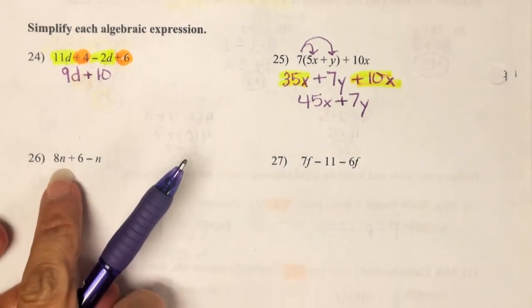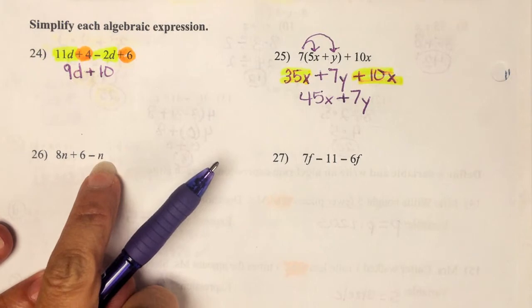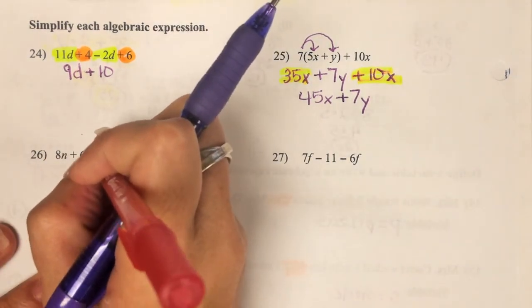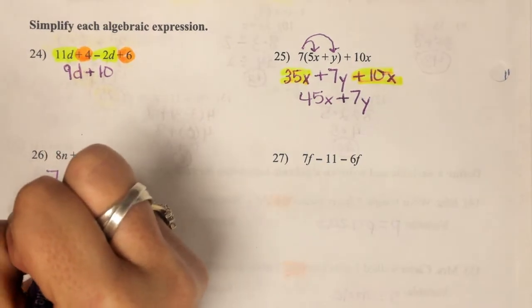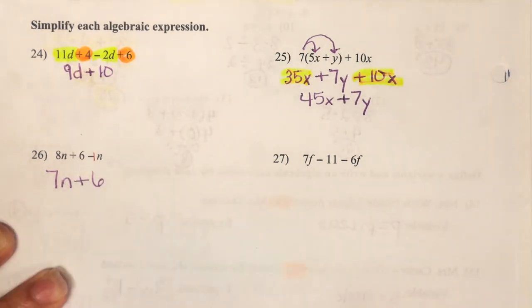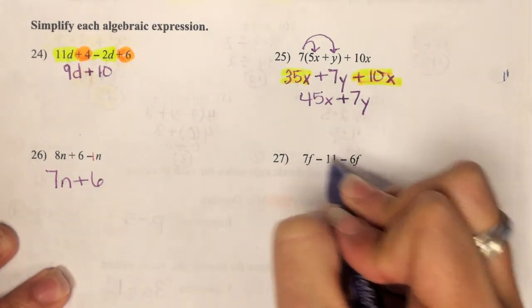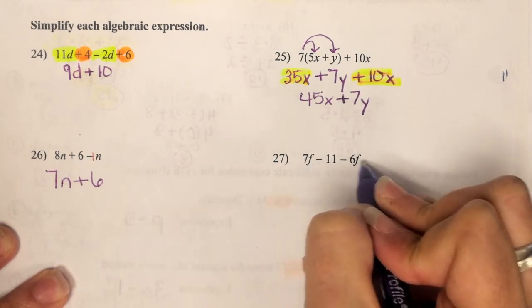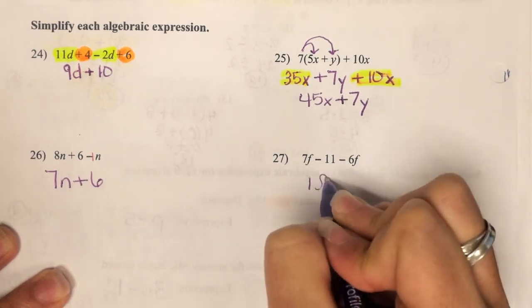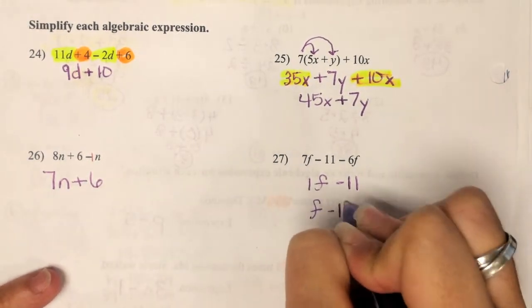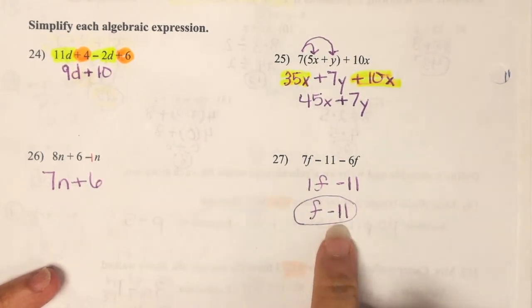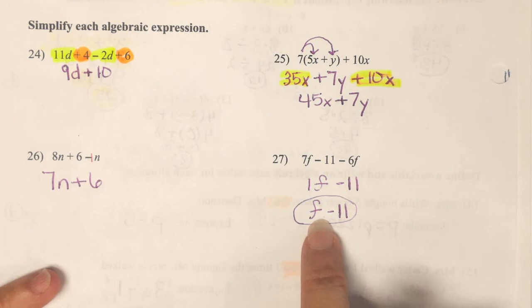On number 26. 8n minus n. Listen, we talked about this. If it's just an n, your brain has to think of it as minus 1n. So 8n minus 1n is 7n. And then bring down the plus 6, because he has no other friends to hang out with. You just bring him down. 7f goes with minus 6f. 7f minus 6f is just, some of you wrote 1f minus 11. And I let it go. But listen, we talked about the best answer is f minus 11. That's really the perfect answer I was looking for, because 1 times f is f. So I'm begging you to drop the 1 in front of any variable.